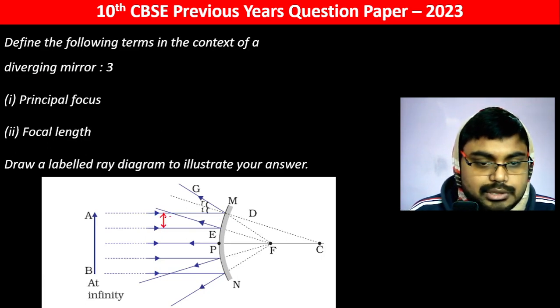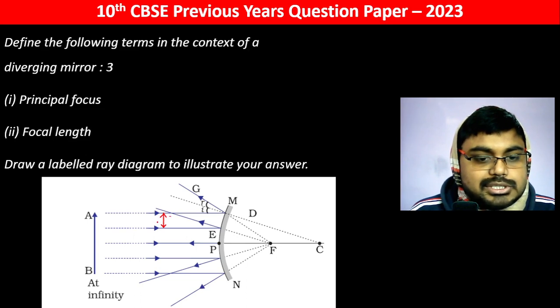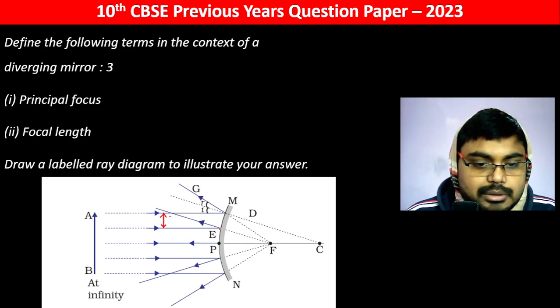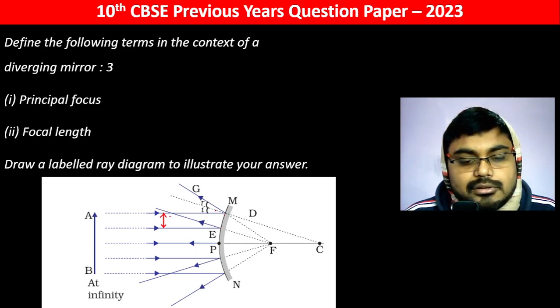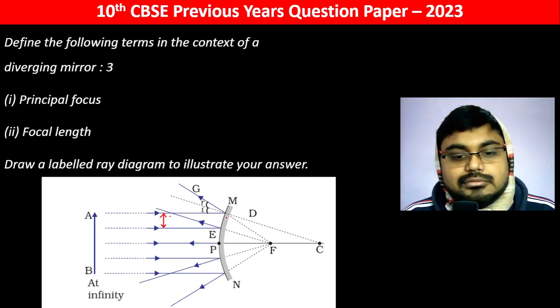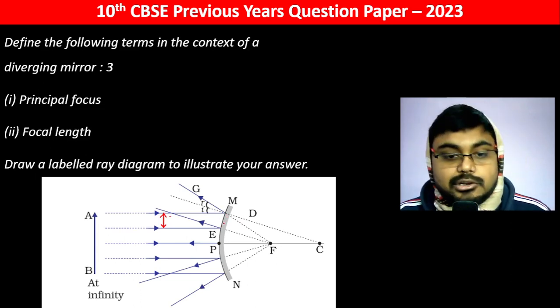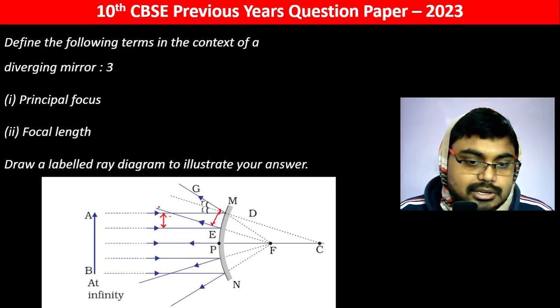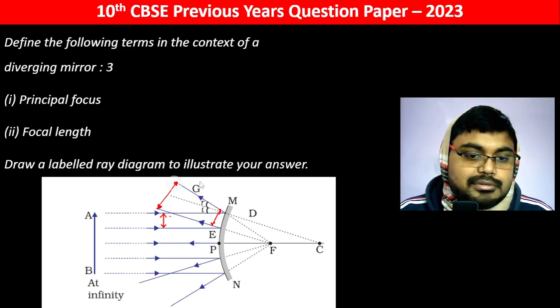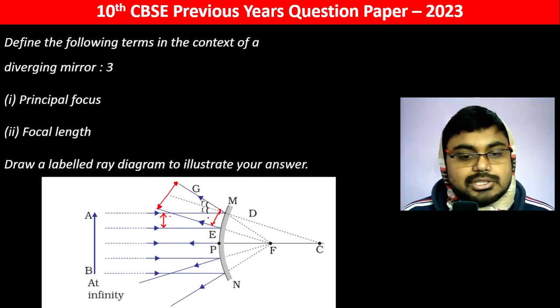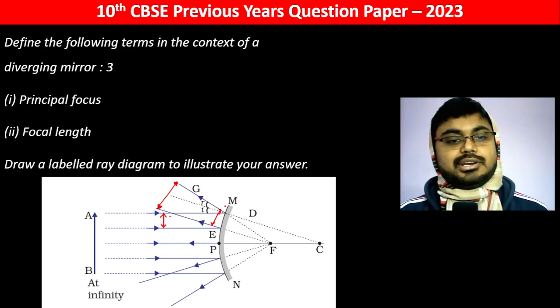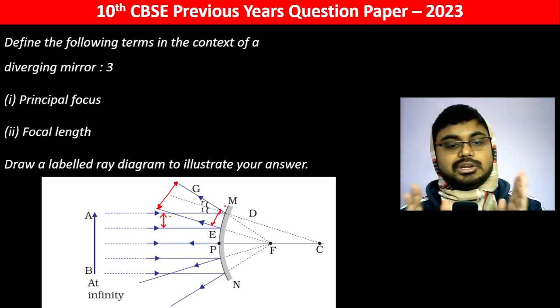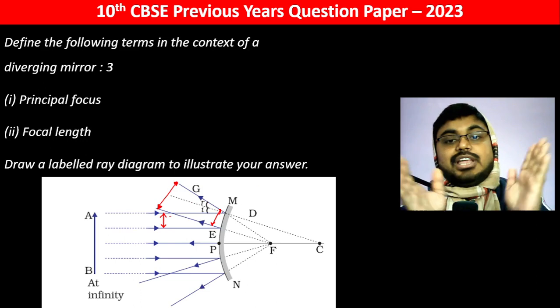When rays hit the mirror and reflect, you see the rays are getting more separated, away from each other. The distance between the rays is increasing. It's diverging.